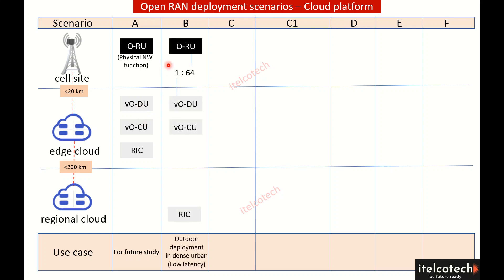Option B has the DU and CU at the edge cloud, but the Radio Intelligent Controller is kept at the regional cloud. This is widely used for outdoor deployment, particularly in dense urban areas where low latency is required, since the CU is kept at the edge cloud.